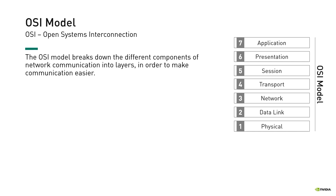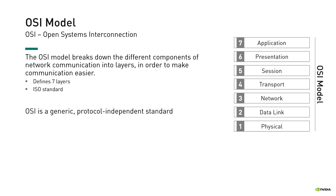The Open Systems Interconnection, or OSI, is an ISO standard model that describes seven layers that computer systems use to communicate over a network. It is a generic, protocol-independent standard that was the first standard model for network communications adopted by all major computer and telecommunication companies in the early 1980s. If you've heard about a layer 2 device such as a switch, or a layer 3 protocol such as IP, they all refer to the respective OSI layer. We'll cover some of those later.